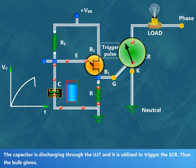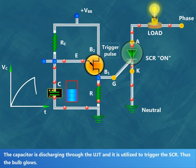The capacitor is discharging through the UJT and it is utilized to trigger the SCR, thus the bulb glows.